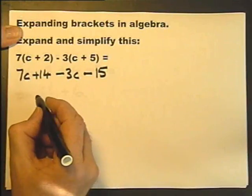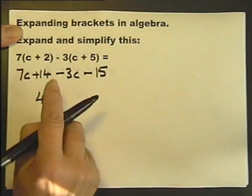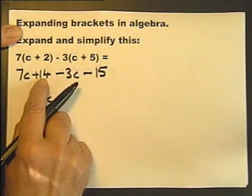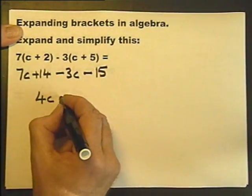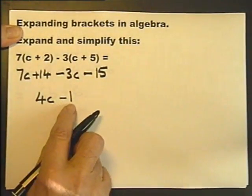Collecting together the information, 7C minus 3C is 4C. Plus 14 minus 15 is minus 1.